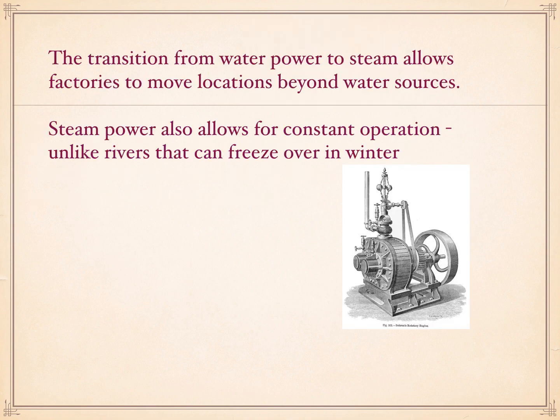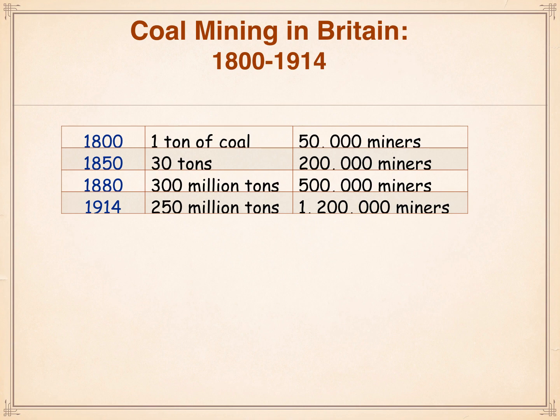The transition from water power to steam allows factories to move locations beyond water sources, and steam power allows for constant operation. Rivers freeze during the winter — we're talking about England — so if you have your factory powered by steam, you can run it 24-7 essentially. What's going to provide that steam, of course, is the coal mining industry. If you look at some of these numbers, you can see that from 1800, within the space of a little over 100 years, the increase in coal is dramatic — and that tells you about one of the natures of the Industrial Revolution: its proliferation.